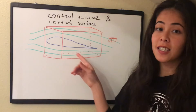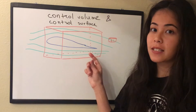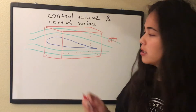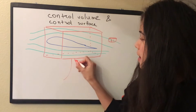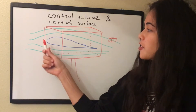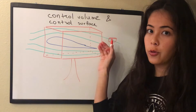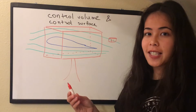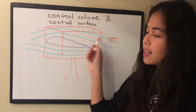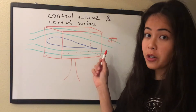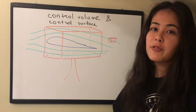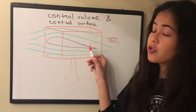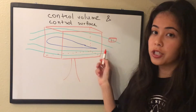Usually it's assumed that the control volume is fixed in space, so it just stays where you put it. Let's say it has some legs and the air just flows through it. Then with the aerodynamics laws that we will learn in the next video, we can analyze this flow of air through a fixed control volume. We will be able to solve for the properties of air inside the control volume or on the borders.